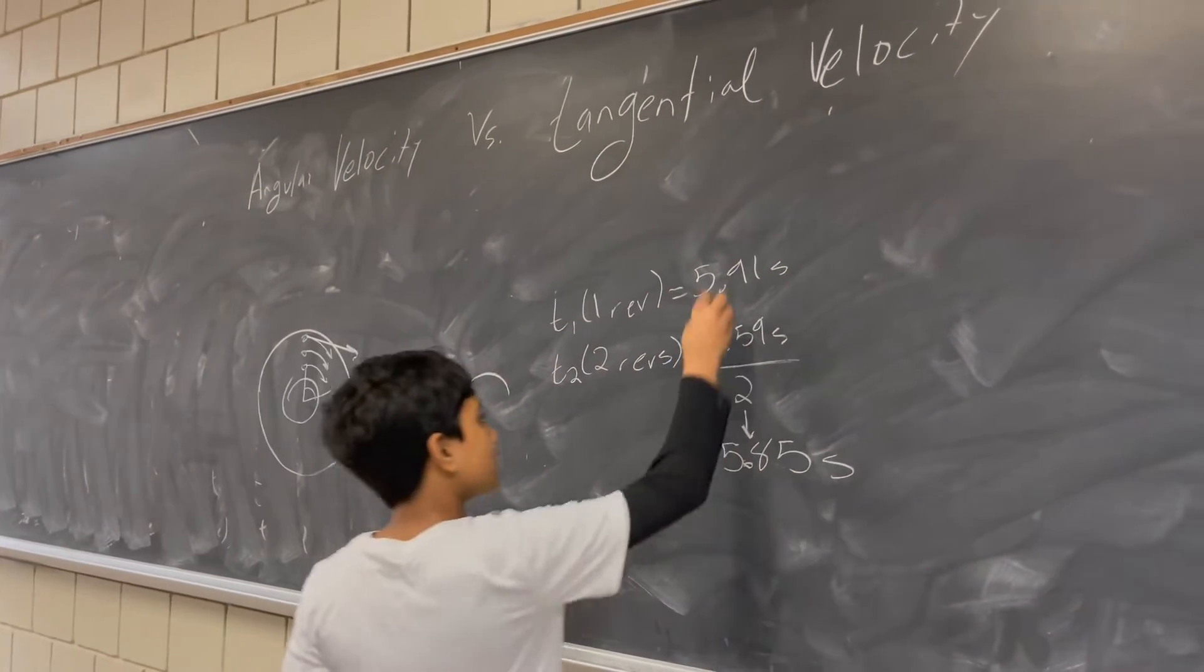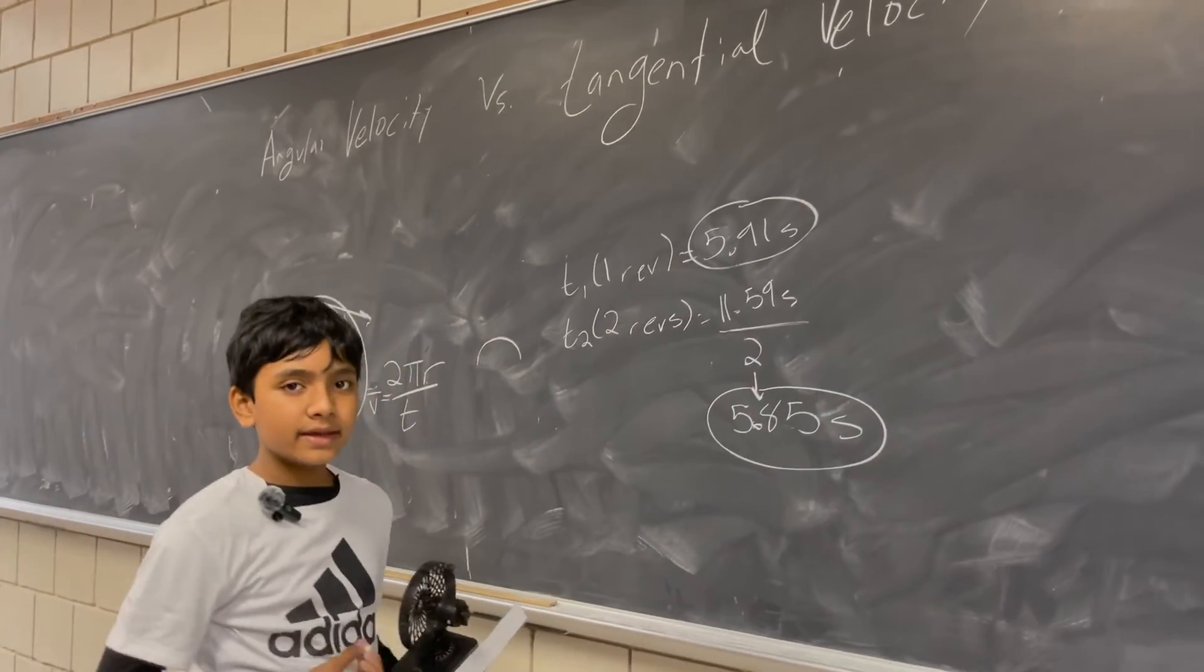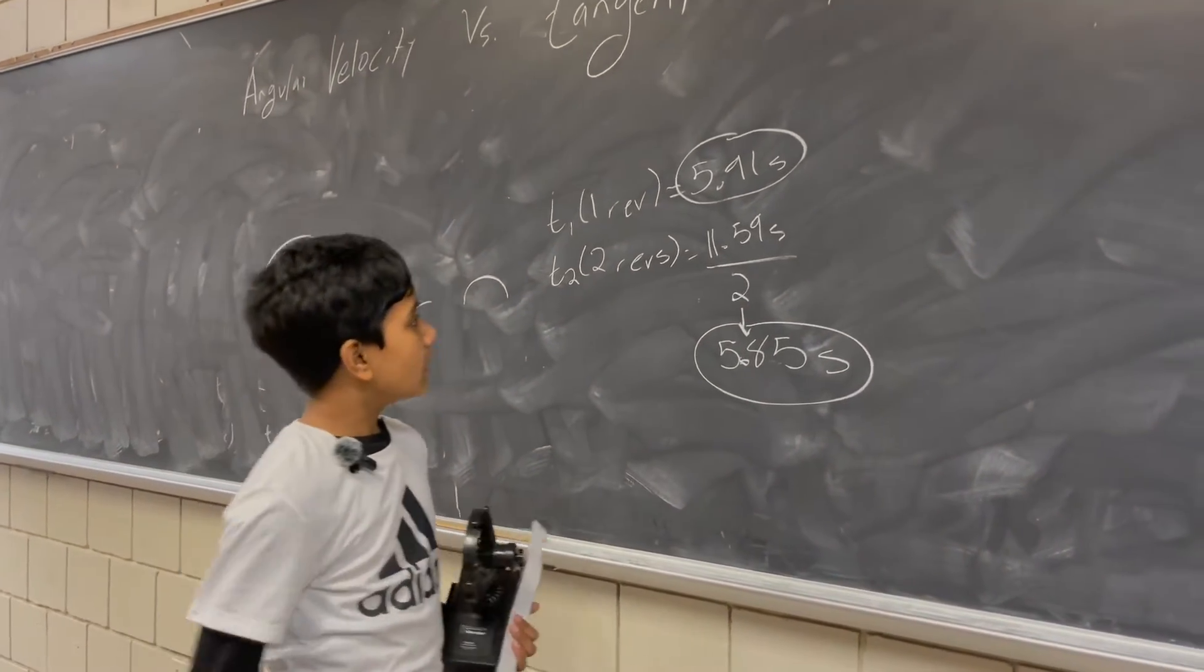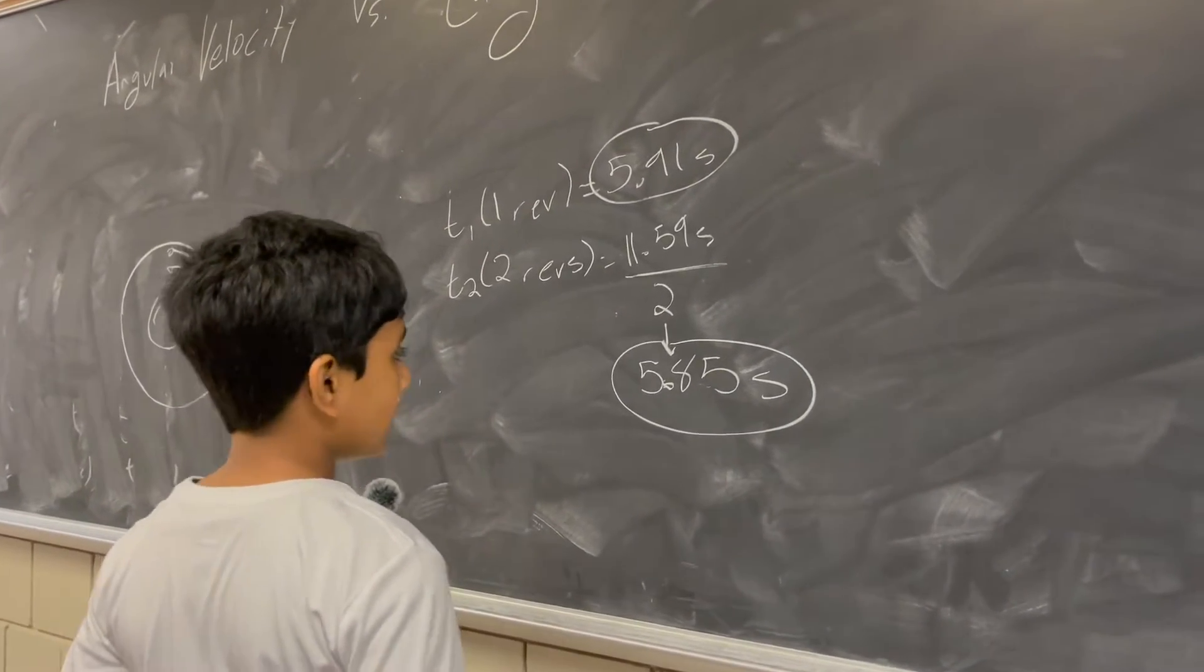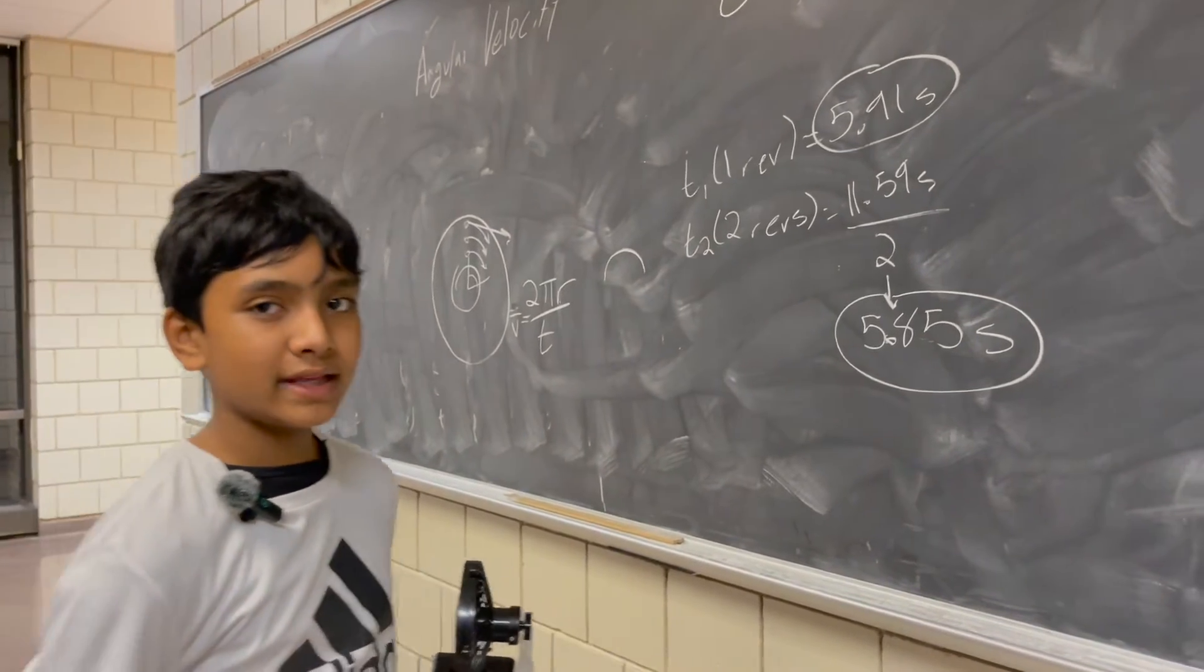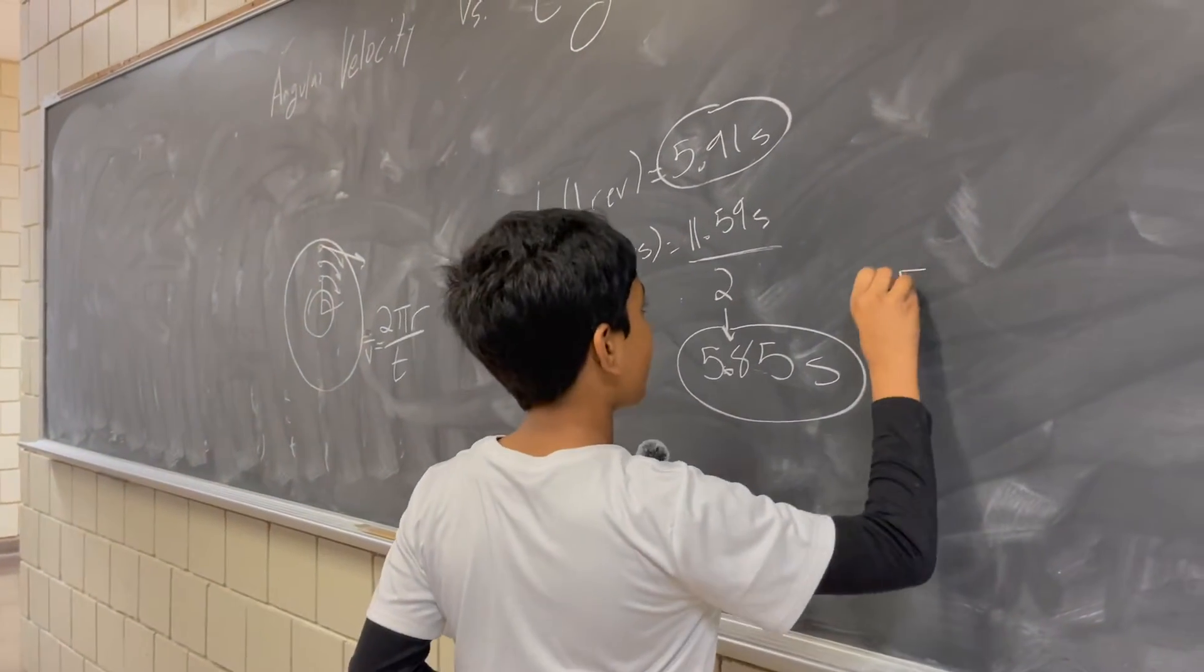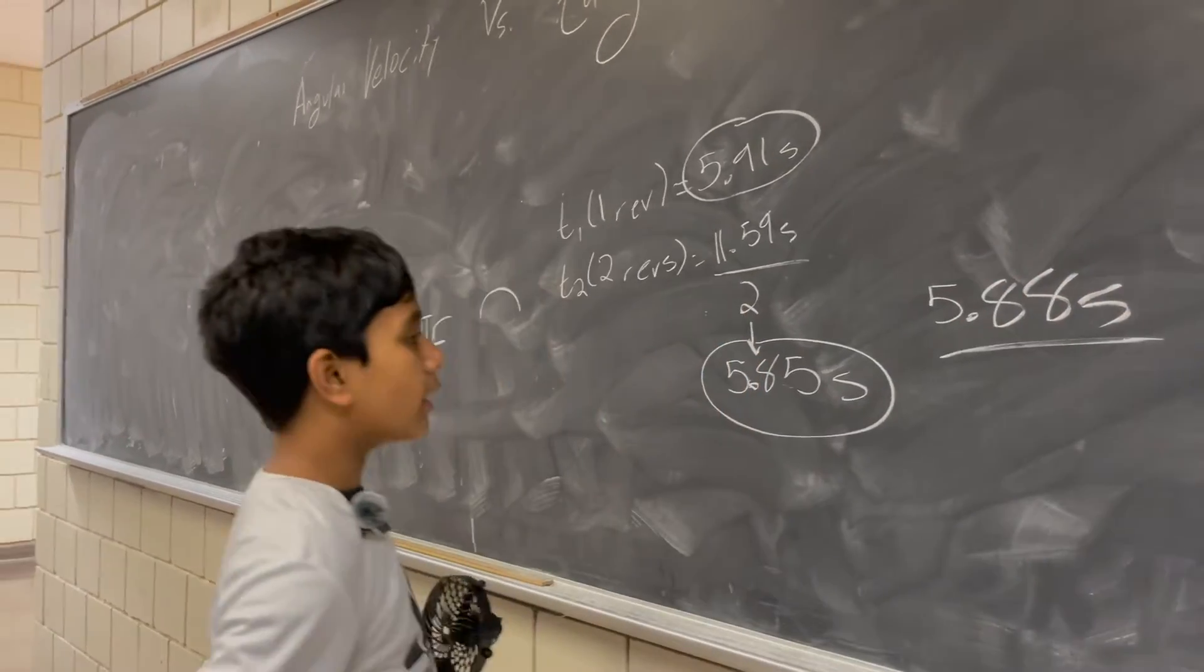We have two data points, 5.91 and 5.85, so we're going to take the average of them, which is going to be 11.76, and dividing 11.76 by 2, you get 5.88. So on average, it takes 5.88 seconds for one revolution.